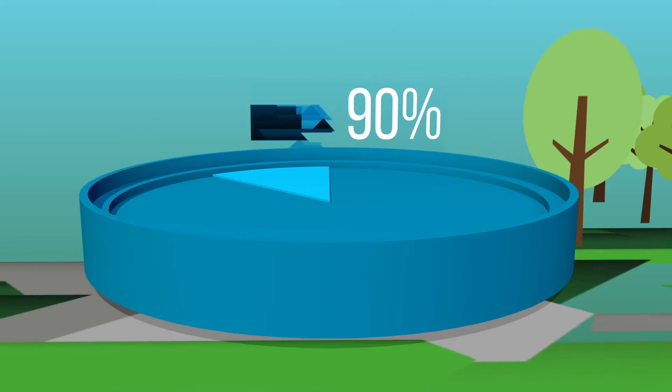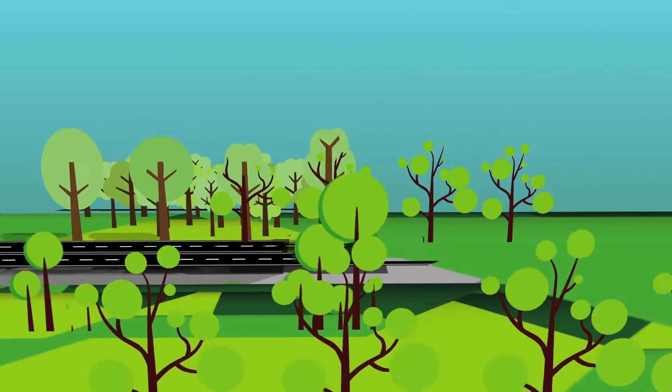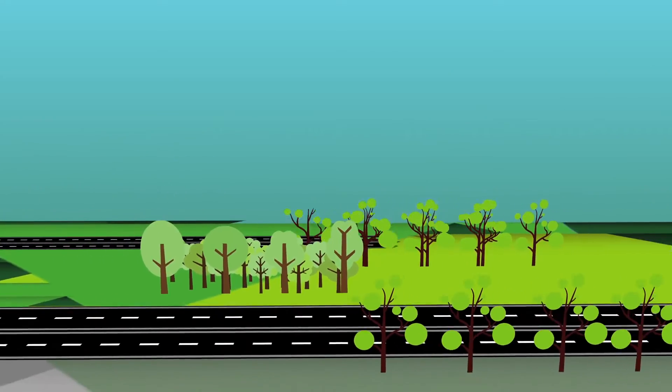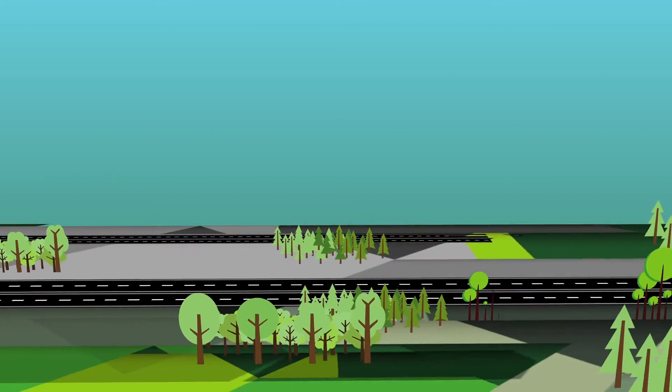90% of oceans were fully or overexploited. We were building more roads and clearing large areas of forest for timber and paper.